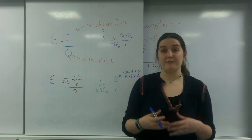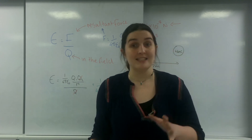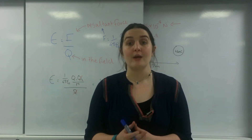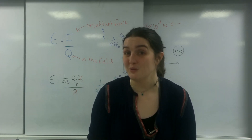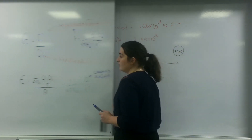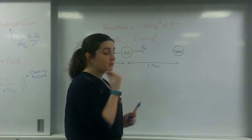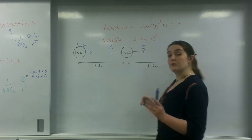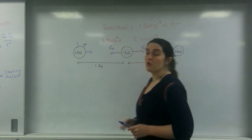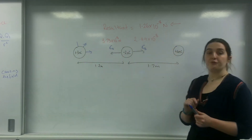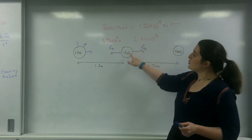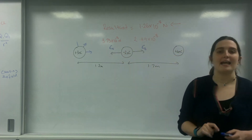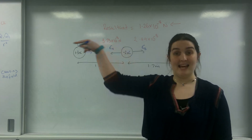So I could work out the field strength just from the thing that's causing the field. I'm going to show you how to use it to work out the resultant field that an object was in. This was a previous question where I worked out using Coulomb's law that the resultant force on the charge in the middle was 1.26 times 10 to the minus 8 Newtons in that direction.